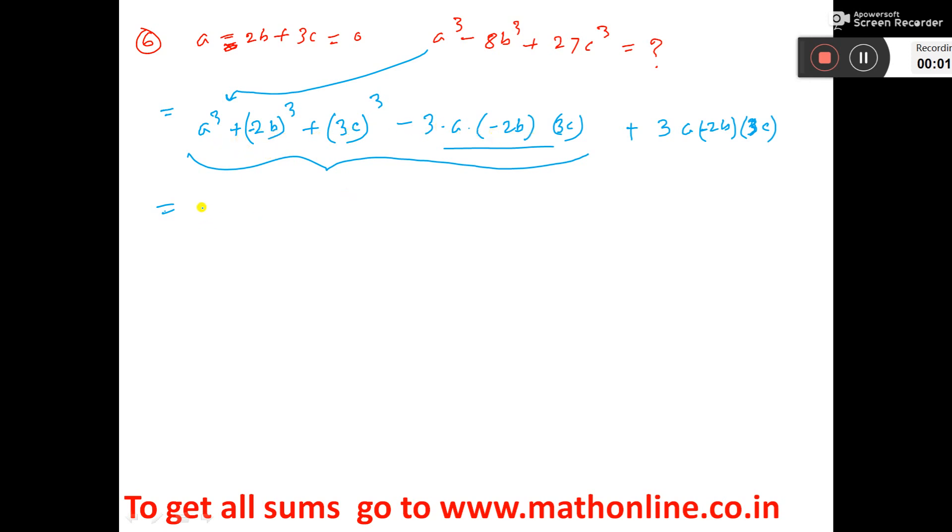One formula is there: a plus b plus c into a square plus b square plus c square minus ab minus bc minus ca.